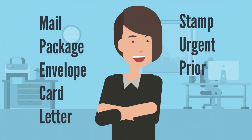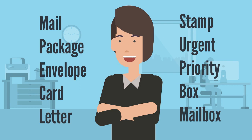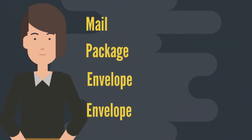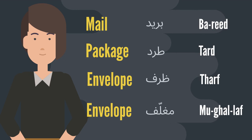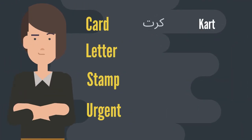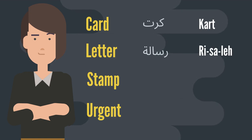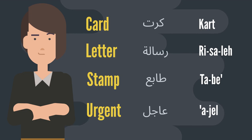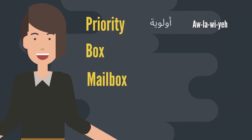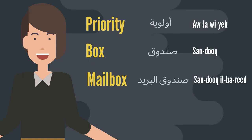Let's review real quick, then we'll go over the plural forms. Mail — بريد. Package — طرد. Envelope — ظرف, or مغلف. Card — كرت. Letter — رسالة. Stamp — طابع. Urgent — عاجل. Priority — أولوية. Box — صندوق. Mailbox — صندوق البريد.